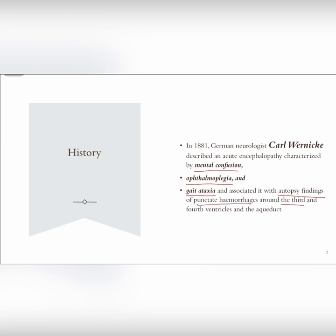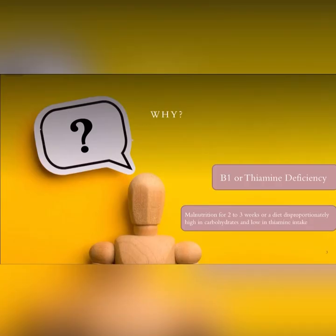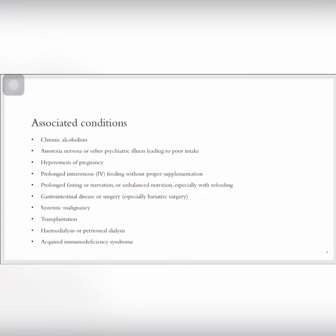Why does this happen? It is due to vitamin B1 or thiamine deficiency, which results from malnutrition for two to three weeks. Or, although we have an intake of nutrition, if the diet is disproportionate, such as high in carbohydrates and low in thiamine intake, it will result in thiamine deficiency and lead to complications such as Wernicke encephalopathy.